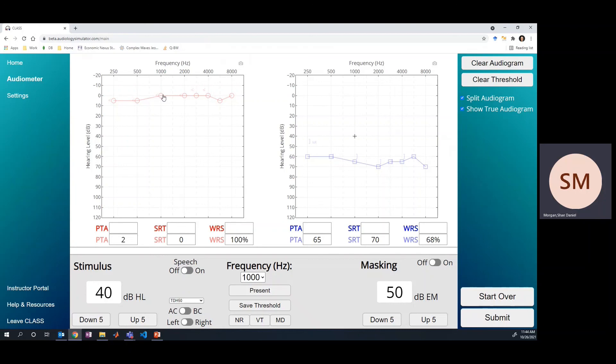Again, in this case, we would need to turn on masking so that we can put enough of the masking noise in to cover that non-test ear in order to accurately test the true thresholds. And if you want to learn more about masking, we have a whole video series on how to mask and learning when you should mask air and bone conduction. So check out the cards and the links below to get to those videos.